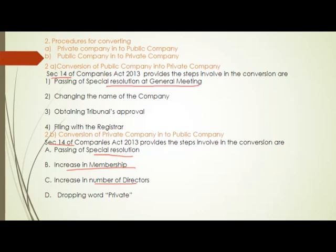After the resolution is passed and alteration of articles happens, the second step is changing the name of the company — the company's name will be changed to 'Private Limited'. After that, the third step is to obtain the Tribunal's approval. After completing these first three steps, the details should be furnished before the Registrar within 15 days. Once the Registrar's approval is also obtained, the company's conversion from public to private limited company will be completed.